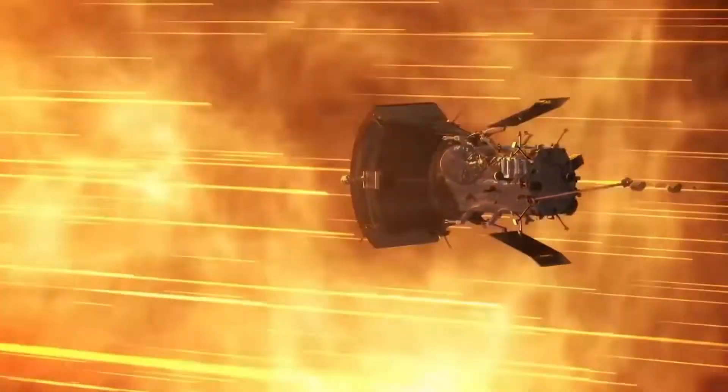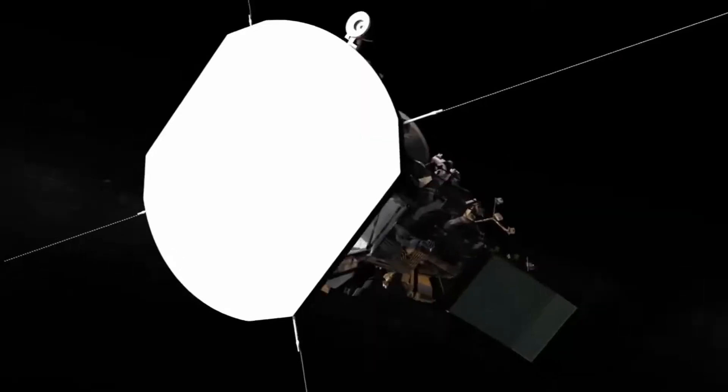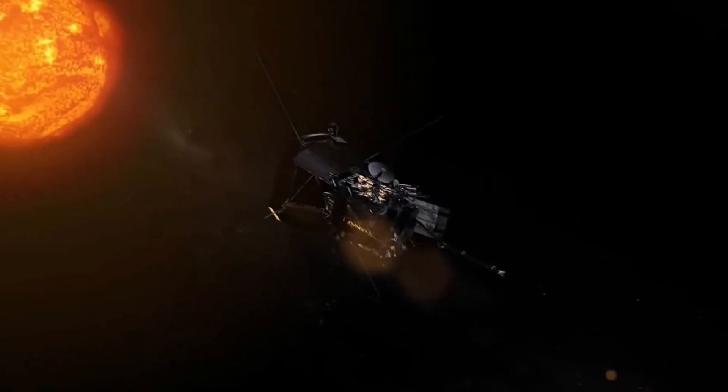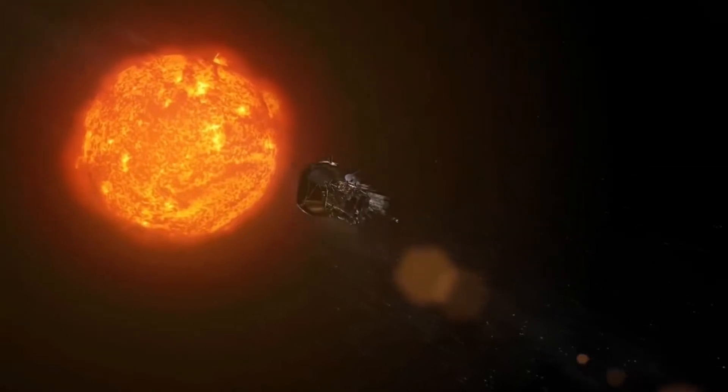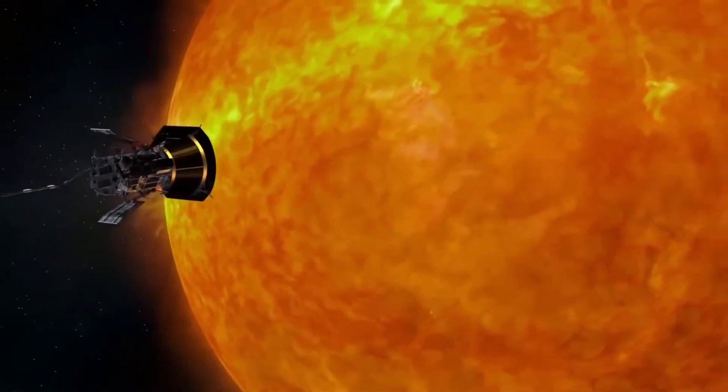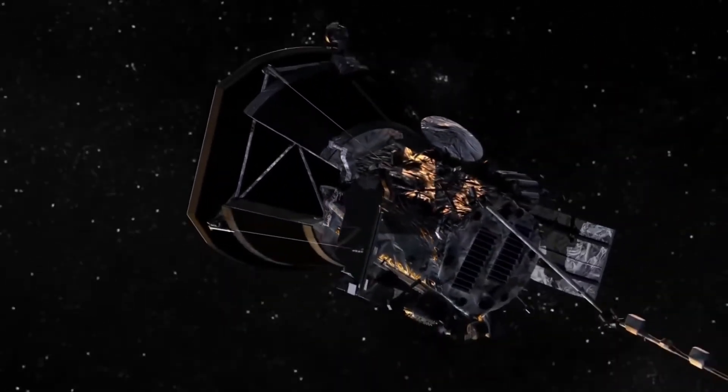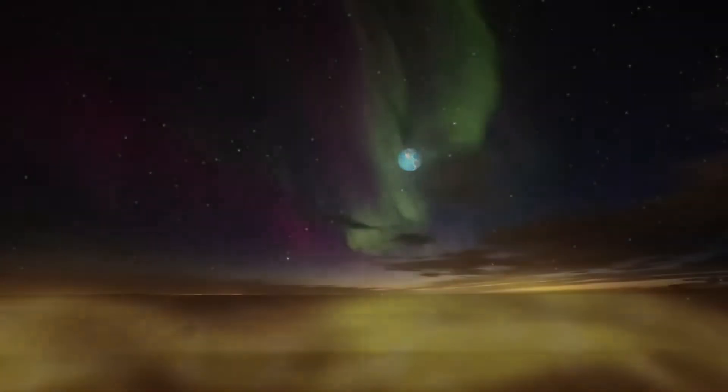The Parker Solar Probe is the fastest traveling spacecraft in man-made history. It travels at a speed of 692,000 kilometers per hour. If the craft wants to travel a distance of one light year, it would take 1,581 years.